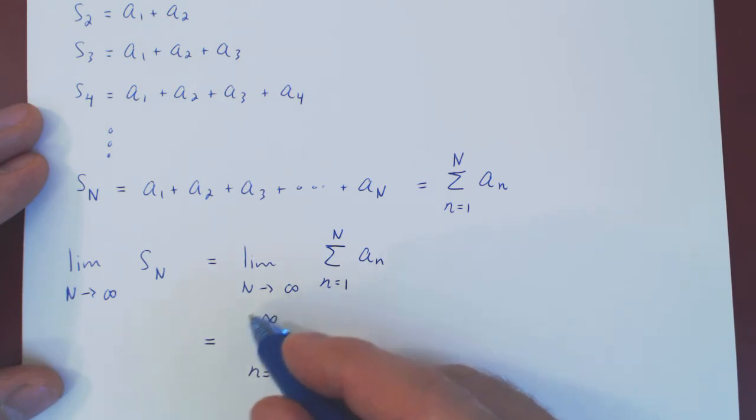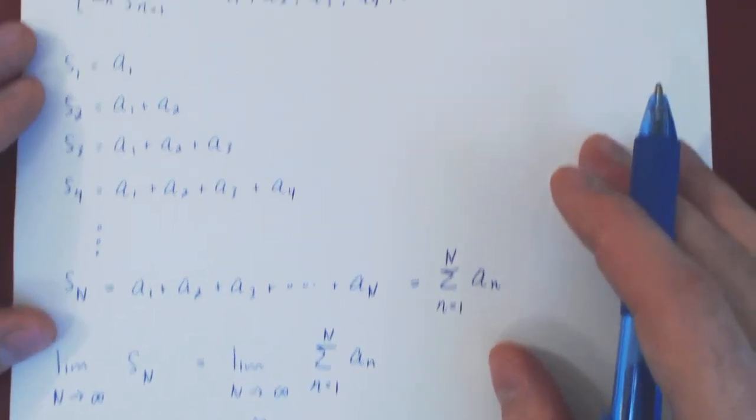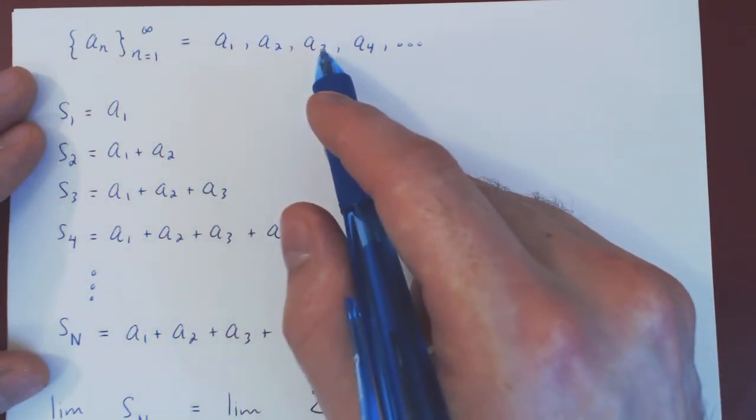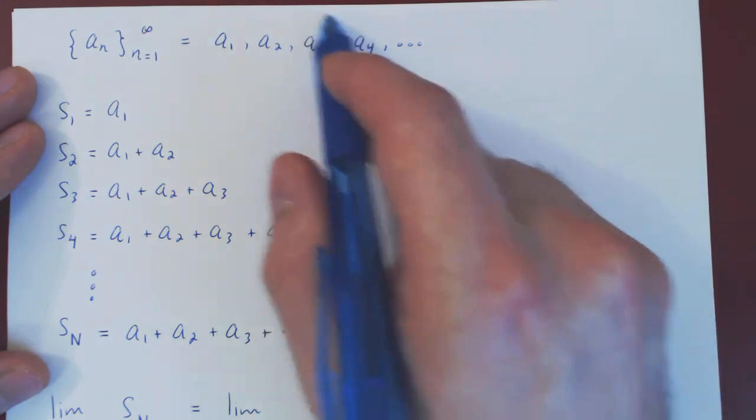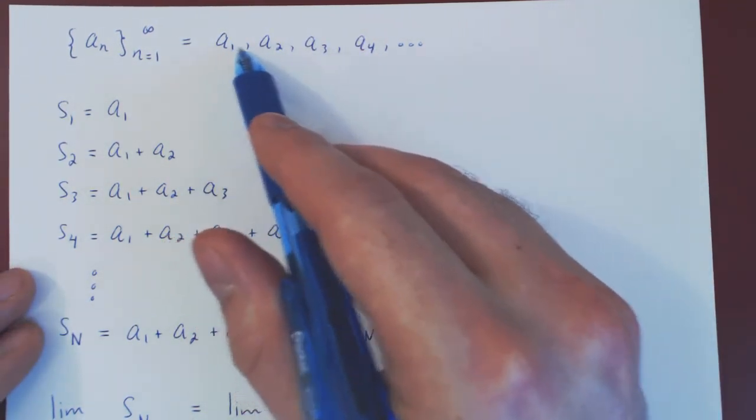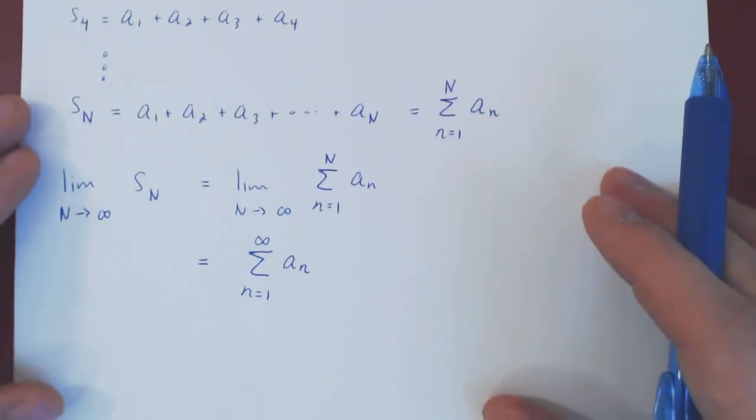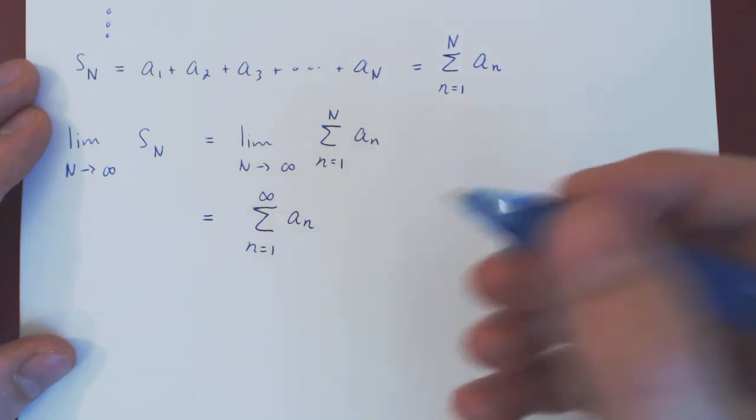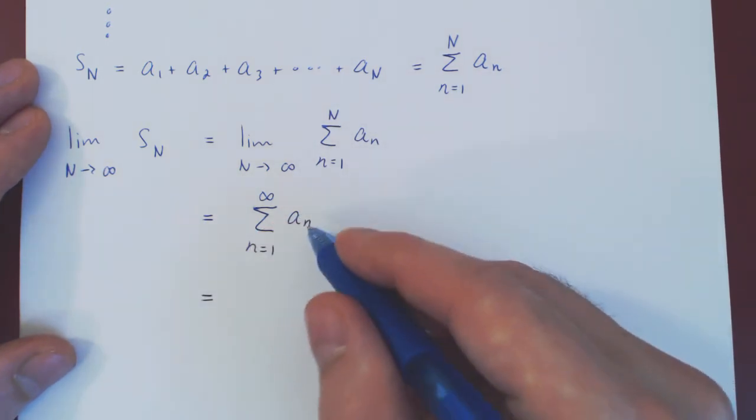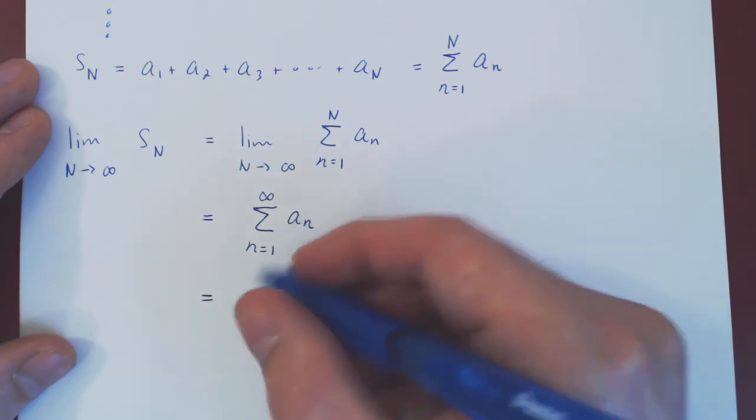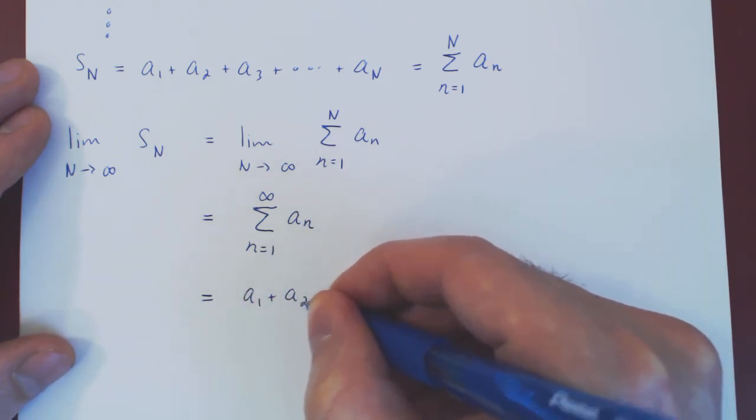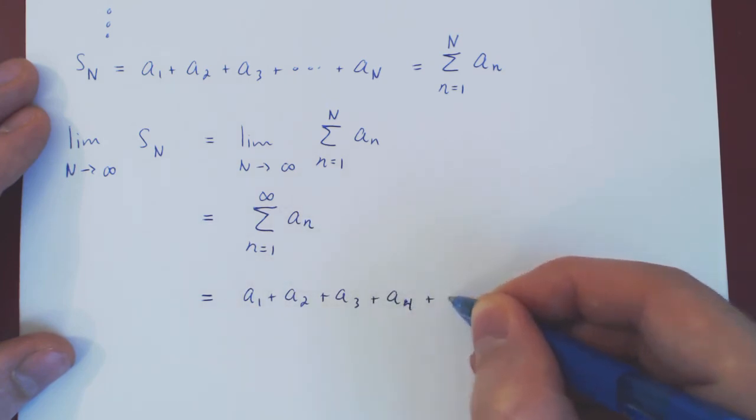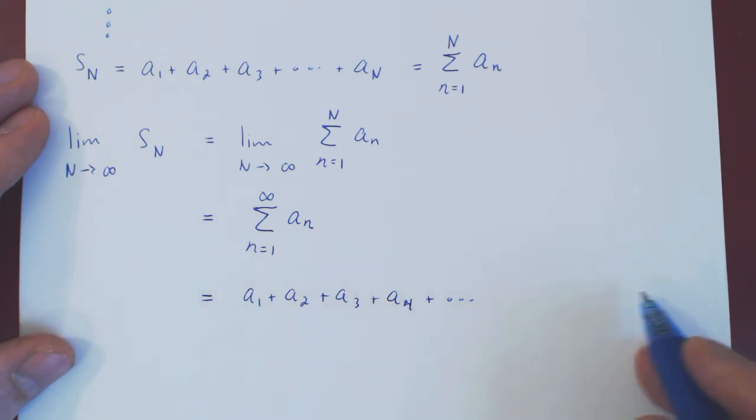And this is the series corresponding to the initial sequence. The sequence is the list of individual terms, of these individual real numbers. The corresponding series is trying to add all of the terms in your sequence together. And again, you can write this out explicitly to make this more intuitive. This is trying to do what? Well, a1 plus a2 plus a3 plus a4 and so forth. We're trying to add all the terms of our sequence together.